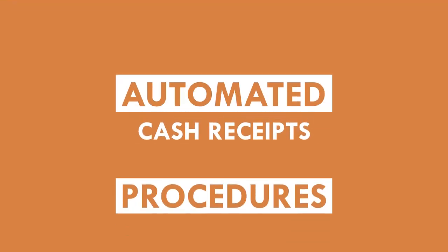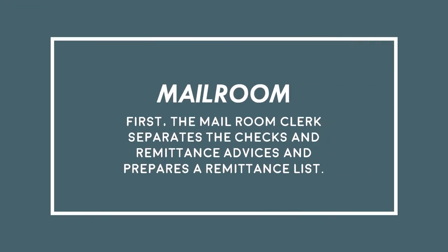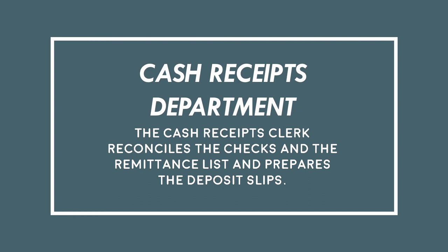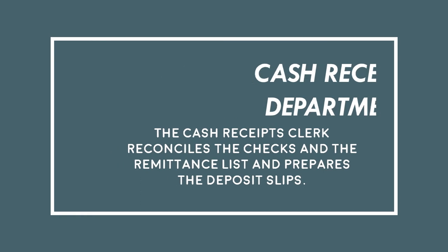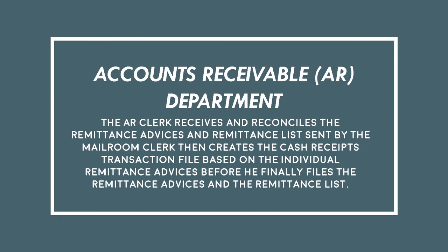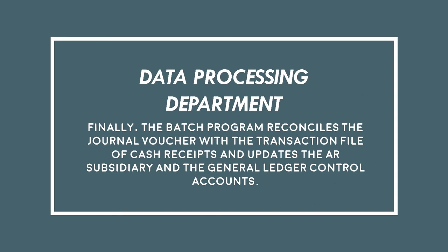Now let's proceed to automated cash receipts procedures. First, the mailroom clerk separates the checks and the remittance advices and prepares a remittance list. After these, the cash receipts clerk reconciles the checks and the remittance list and prepares the deposit slip. Then, the AR clerk receives and reconciles the remittance advices and remittance list sent by the mailroom clerk, then creates the cash receipts transaction file based on the individual remittance advices before filing them. Finally, the batch program reconciles the journal voucher with the transaction file of cash receipts and updates the AR subsidiary and the general ledger control accounts.